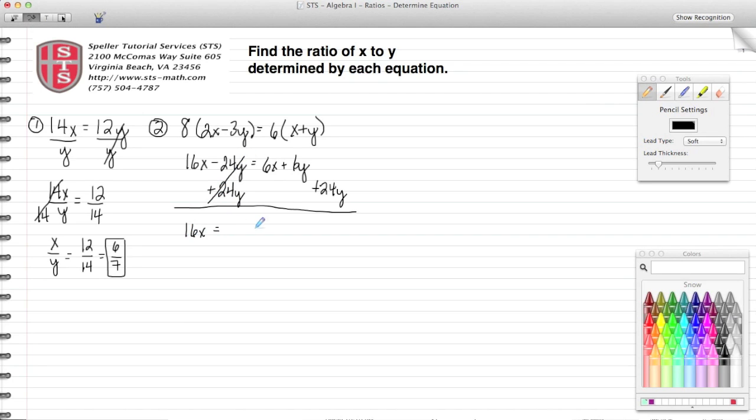I'm left with 16x is equal to 6x plus 6y plus 24y.